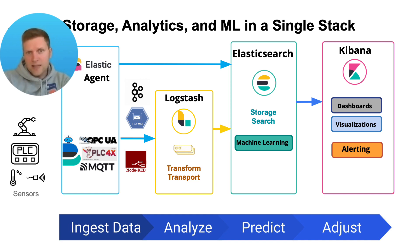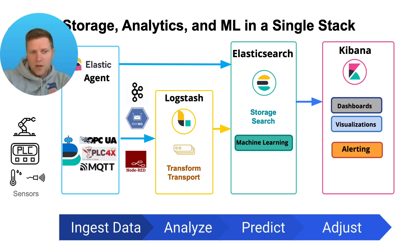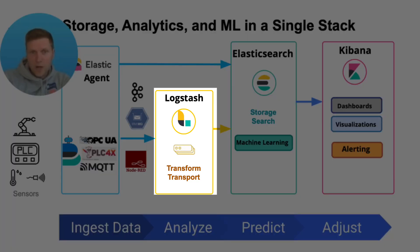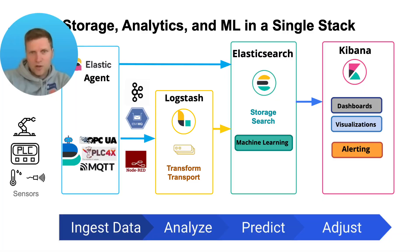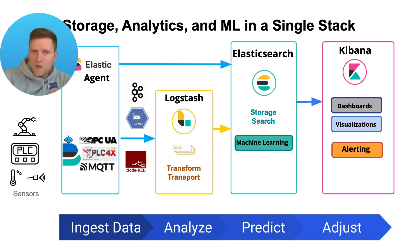From that point, you can send the data to Elasticsearch directly and already start with the analysis. However, in some use cases you may want to overcome network boundaries, or you need to transform the data into the right shape, or you want to enrich the data with geo information. Then you can do this with Logstash. Logstash is an open source ETL tool also developed by Elastic, and we use it to optimize the data and bring it into the right shape to be able to analyze it in a later step.